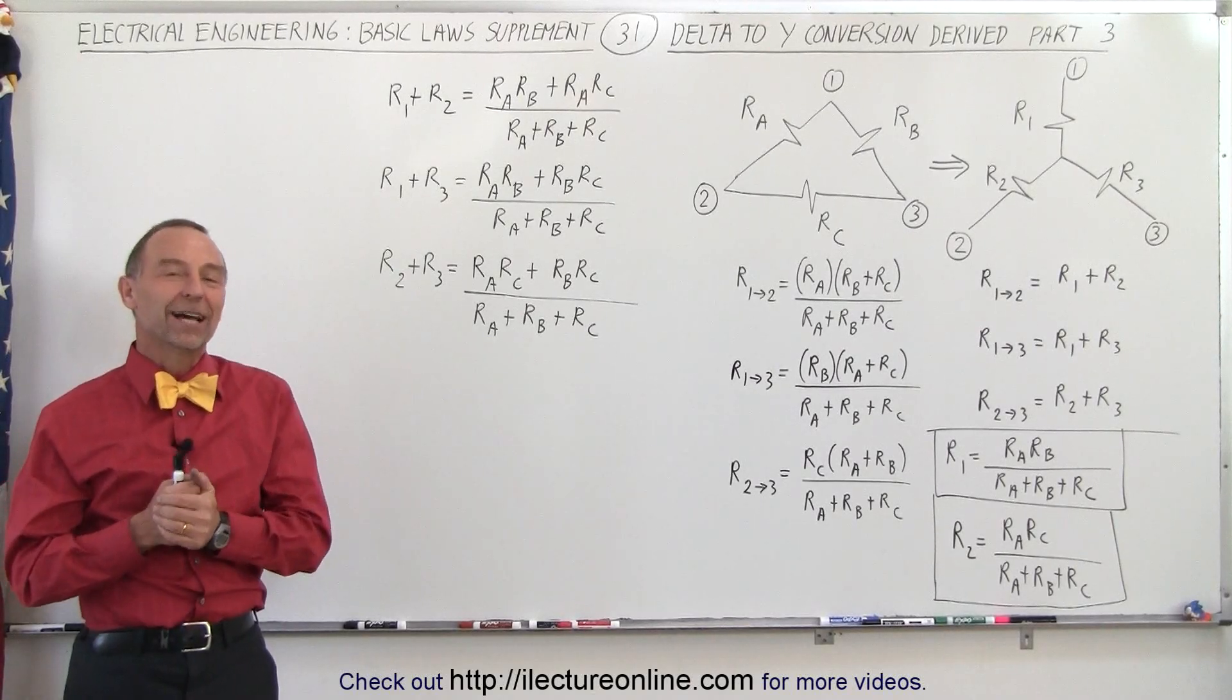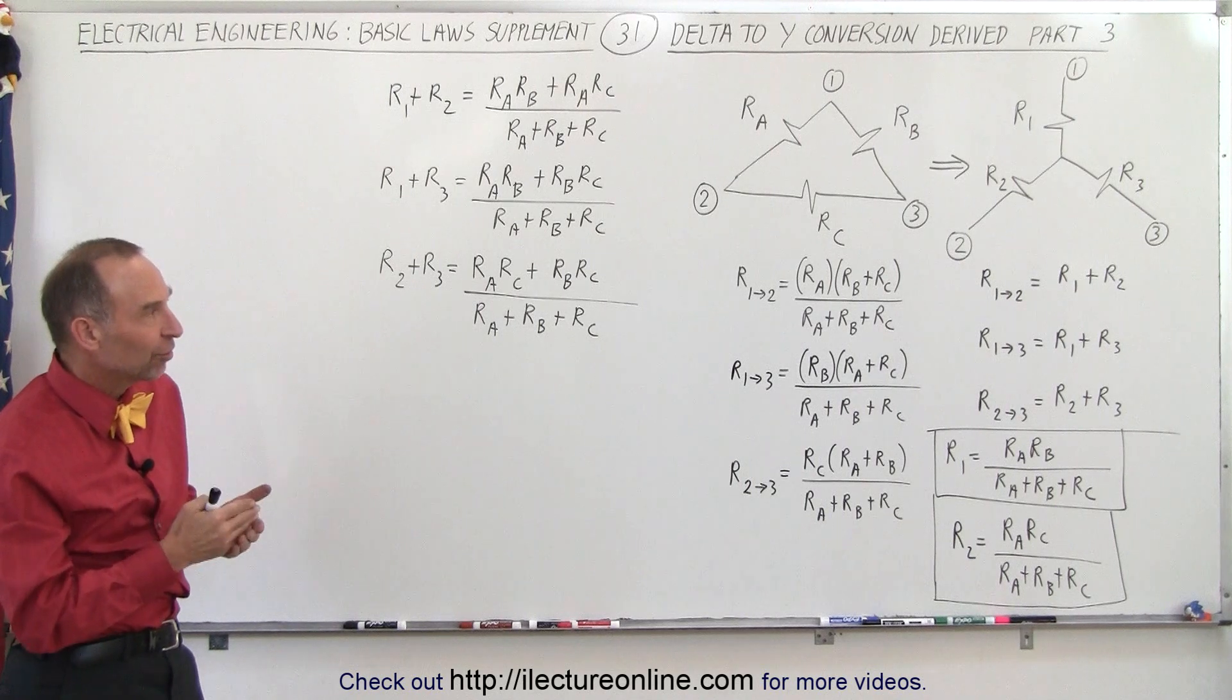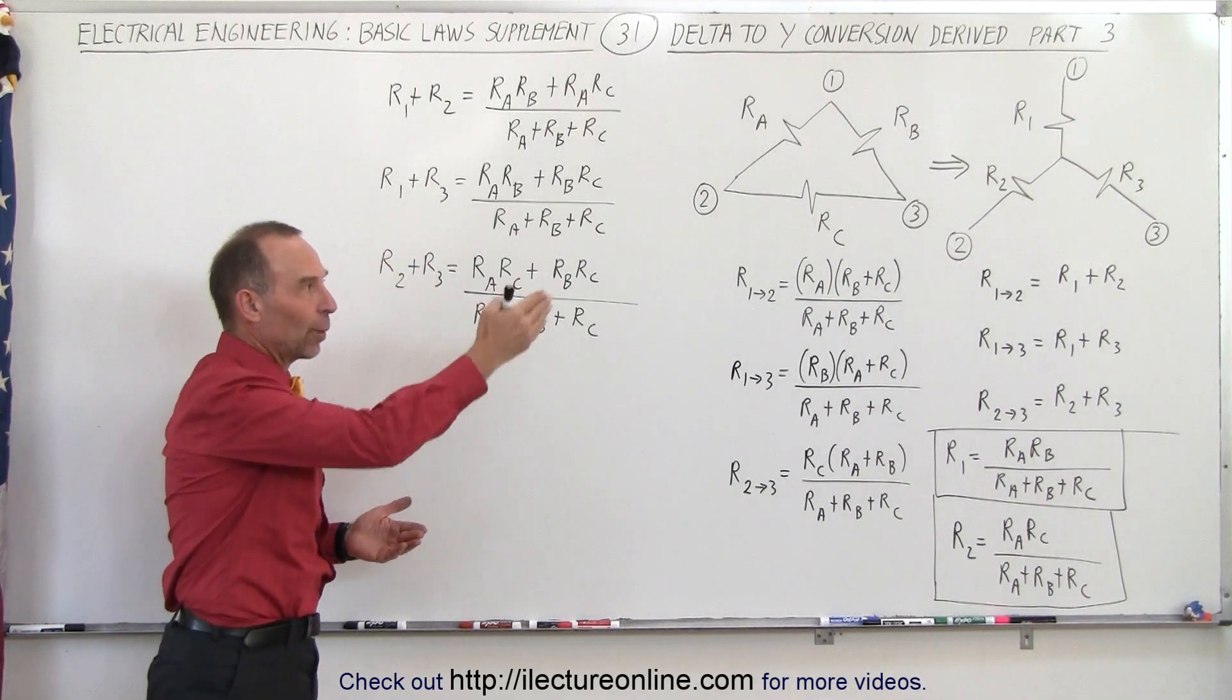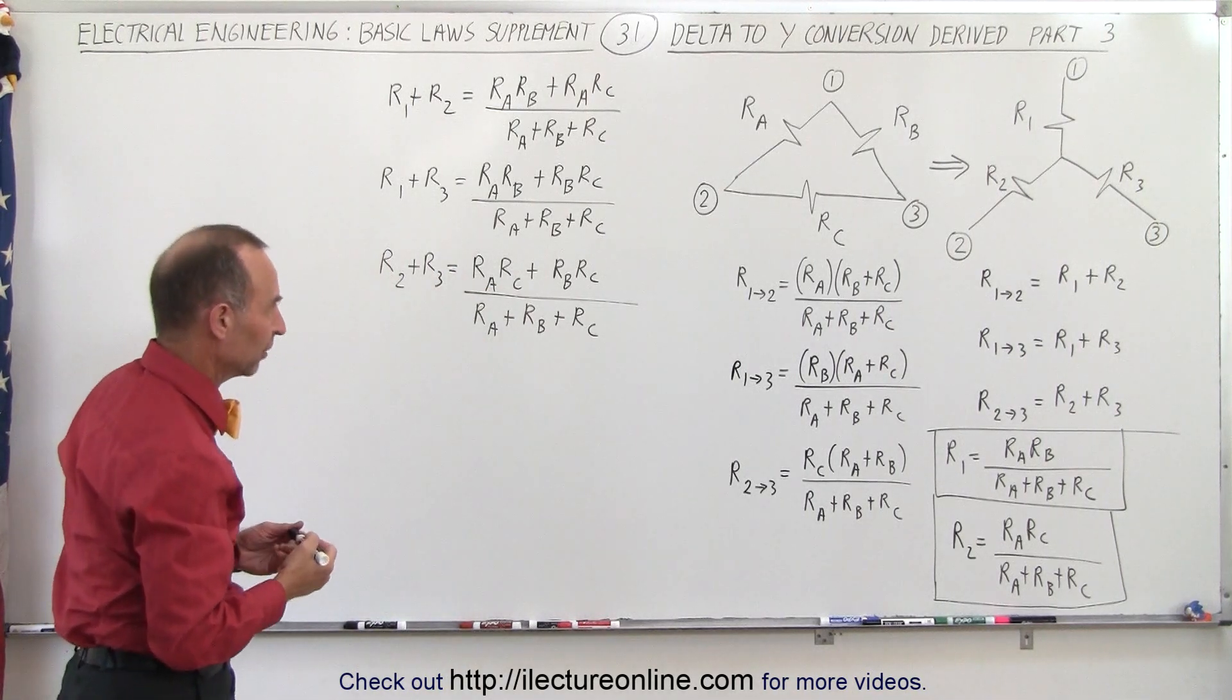Welcome to our lecture online, and now finally we're going to find the equivalent resistance for R3 in the Y circuit so we can do the delta to Y conversion, giving us all three resistors in the Y circuit.